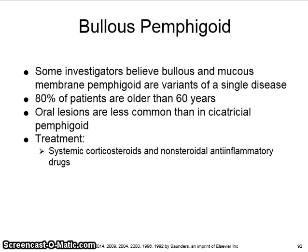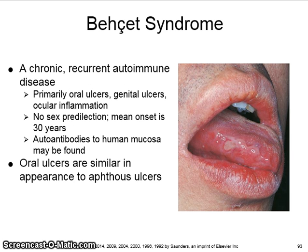And, unlike pemphigus vulgaris, the circulating autoantibodies do not correlate with disease activity. Behçet syndrome is a chronic, recurrent autoimmune disease. It consists primarily of oral ulcers, genital ulcers, and ocular inflammation.